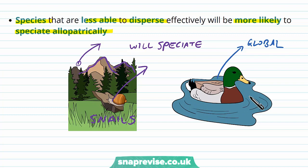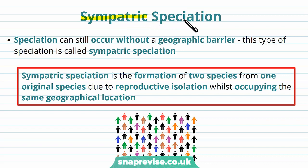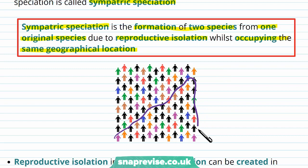The other method is called sympatric speciation. Speciation can still occur, but it doesn't need a geographical barrier. There is still reproductive isolation, but it has nothing to do with a physical barrier. Sympatric speciation is defined as the formation of two species from one original species due to reproductive isolation whilst occupying the same geographical location. This is the key difference from allopatric speciation: allopatric requires a geographical barrier, sympatric does not.